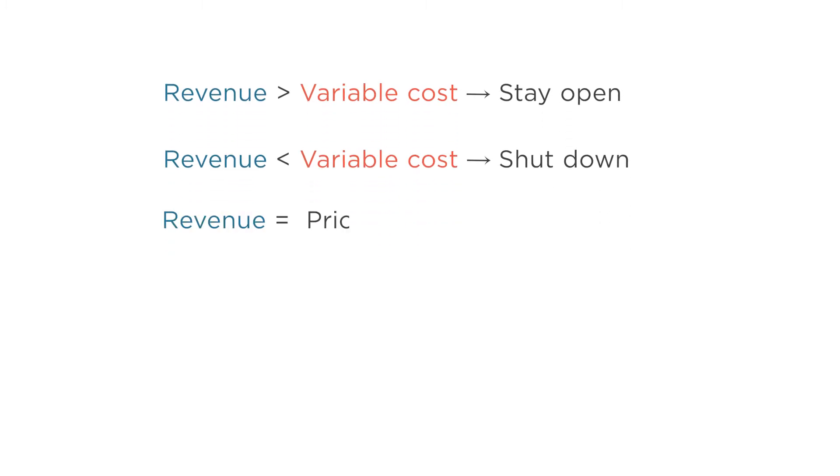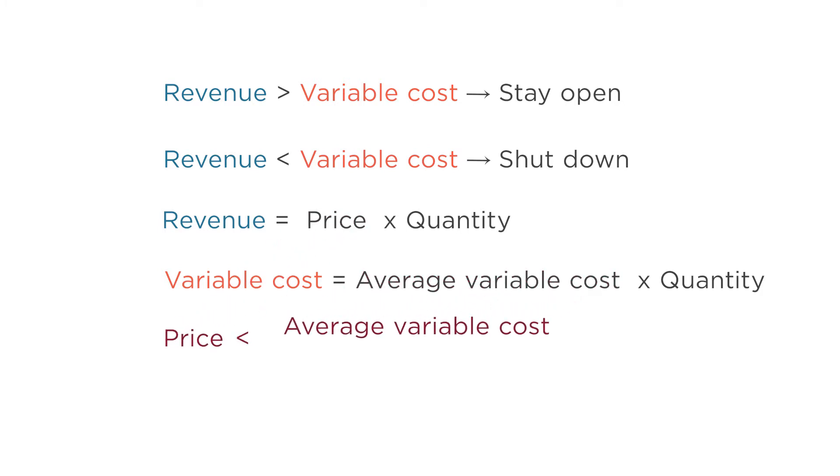Revenue is just price multiplied by the number of units produced. And variable costs is just average variable costs multiplied by the same number of units produced. So if the price of the good in the market ever falls below the average variable cost for the firm, the firm will cease production in the short run.